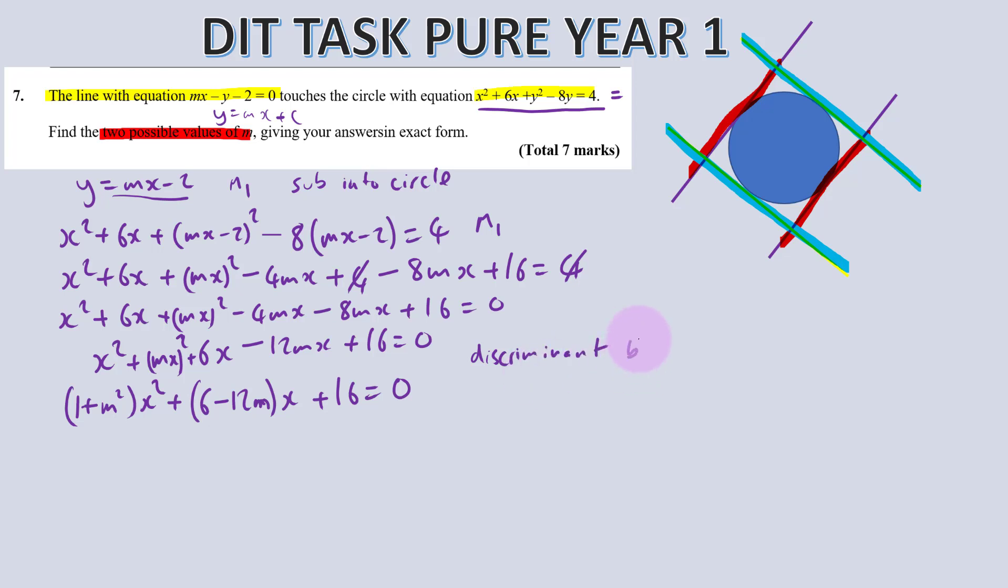Now if we factorize these bits to make it in terms of x squared x and the constant 16, it will look like this. That will be 1 plus m squared times x squared. That's plus 6 minus 12m times x on the other side. Plus 16 equals 0. Now when we're solving quadratics, remember we can use the discriminant. We know it's got two solutions. So the answer should be greater than 0.